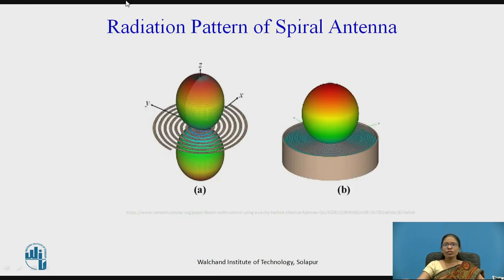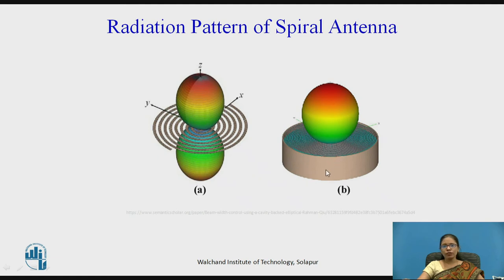Regarding the radiation pattern of the spiral antenna: if I consider an airborne spiral antenna, you can see the radiation pattern is a figure-8 pattern, giving a bidirectional radiation pattern. However, if the same spiral antenna is backed by a cavity as shown in figure B, the lower lobe is suppressed and we get only a unidirectional radiation lobe.